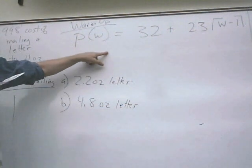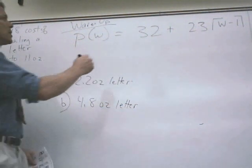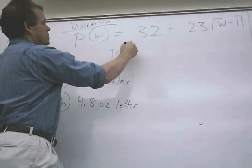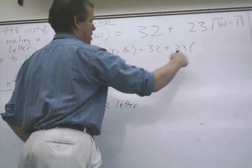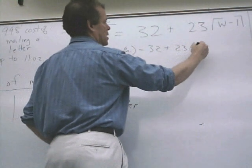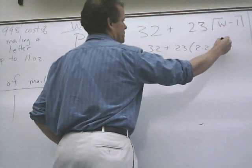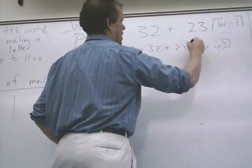But this is the mathematical formula for it. So it's just P of W equals 32 plus 23 times the weight 2.2 minus 1 in my round-up.